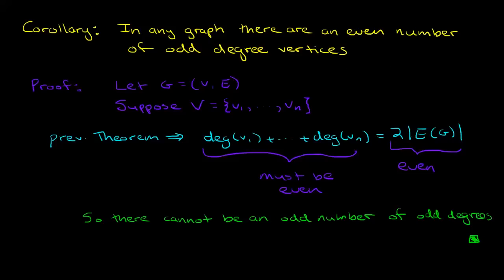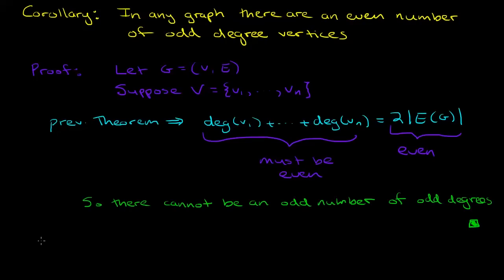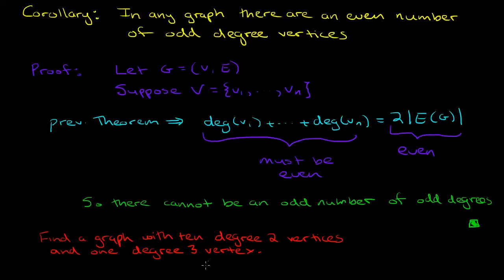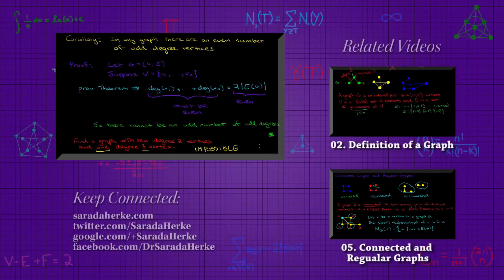If you think about a really easy application of this corollary, let's suppose somebody asks you for this. Find a graph with 10 degree 2 vertices and 1 degree 3 vertex. You would immediately say, well, if I was to have only one degree 3 vertex and no other odd degree vertices, then I would have an odd number of vertices of odd degree. And that is impossible. So this little fact can actually turn out to be quite useful.